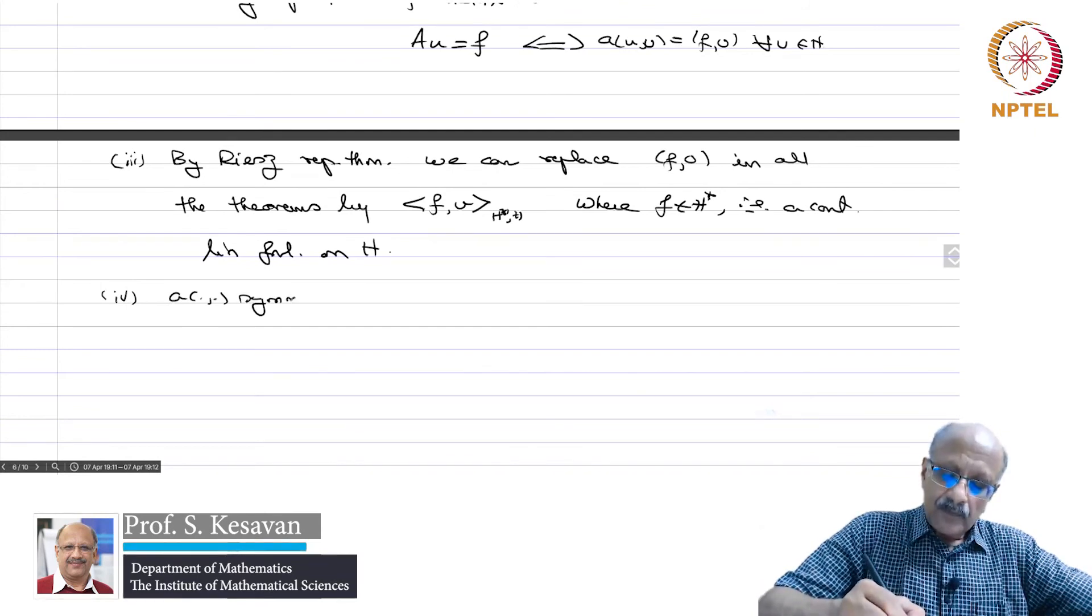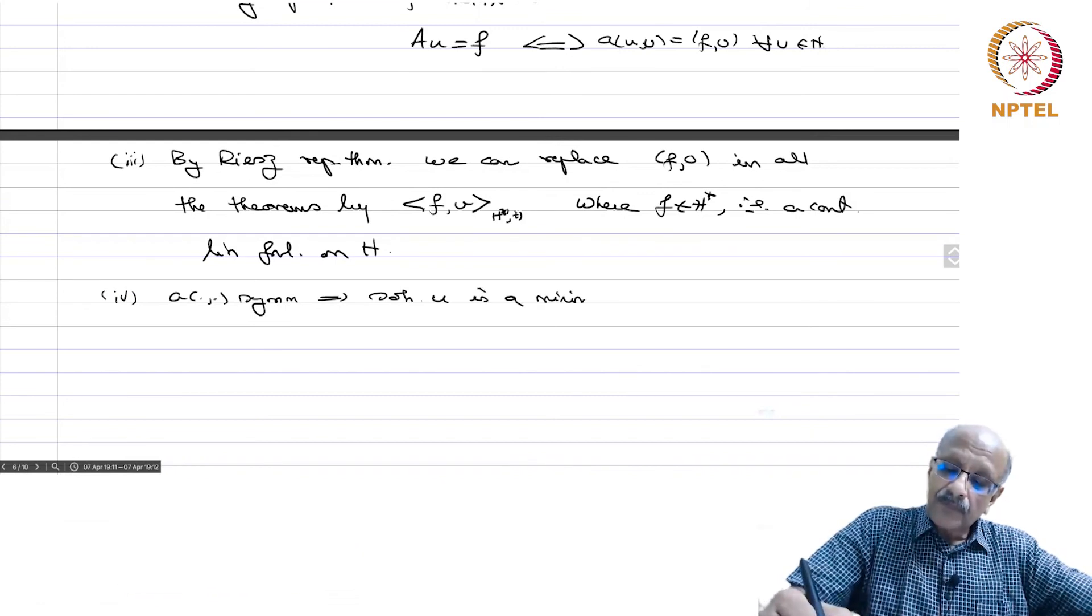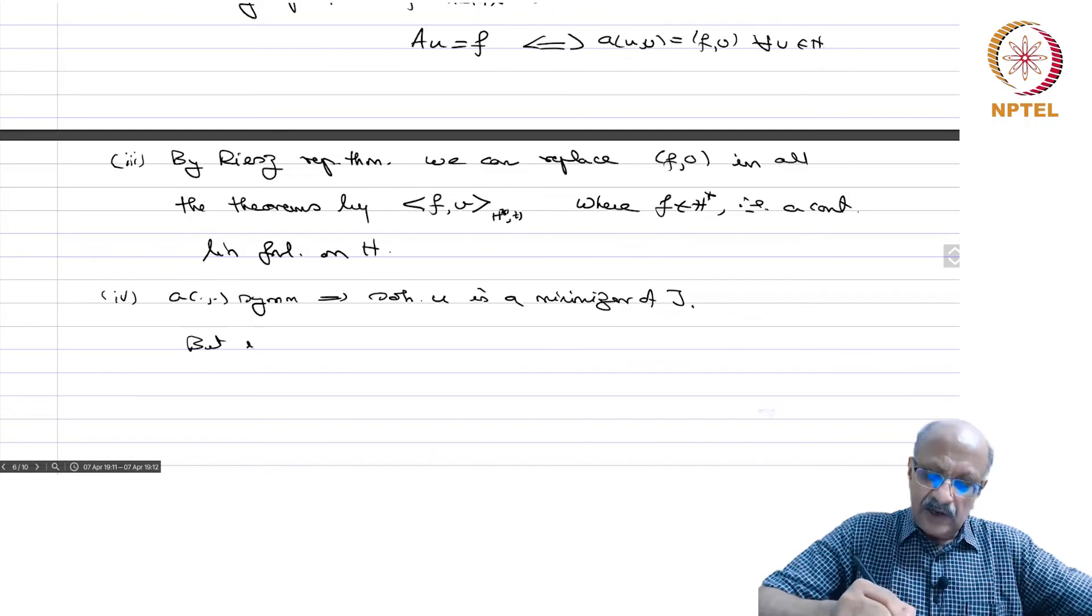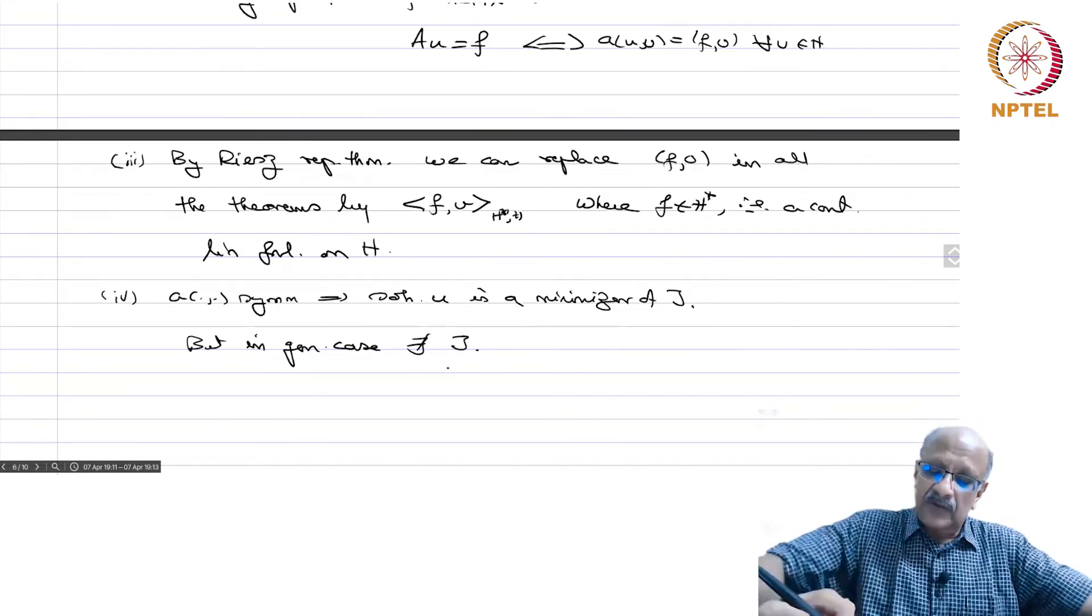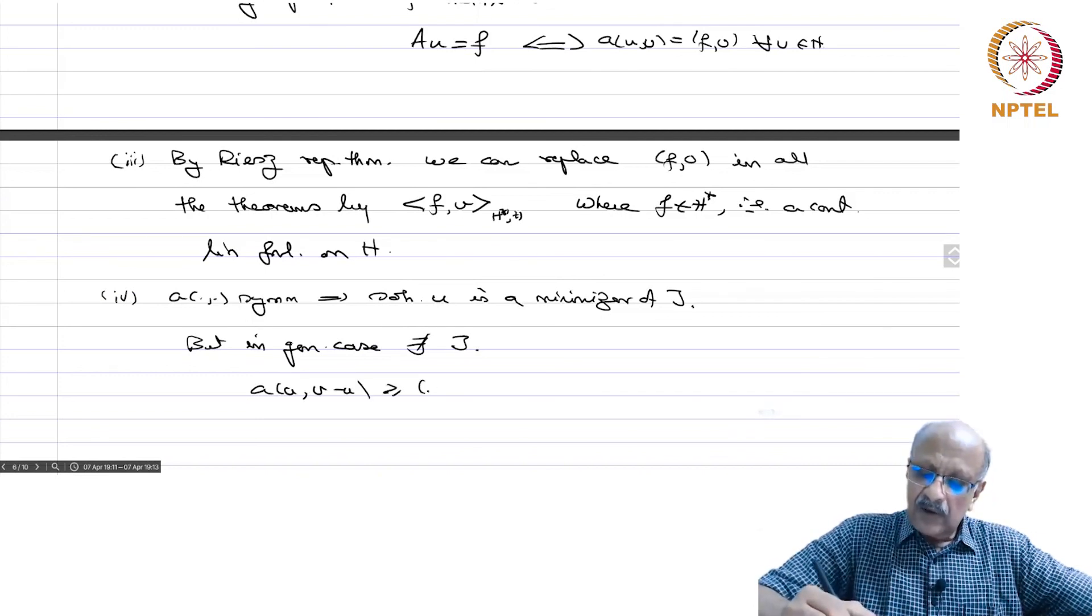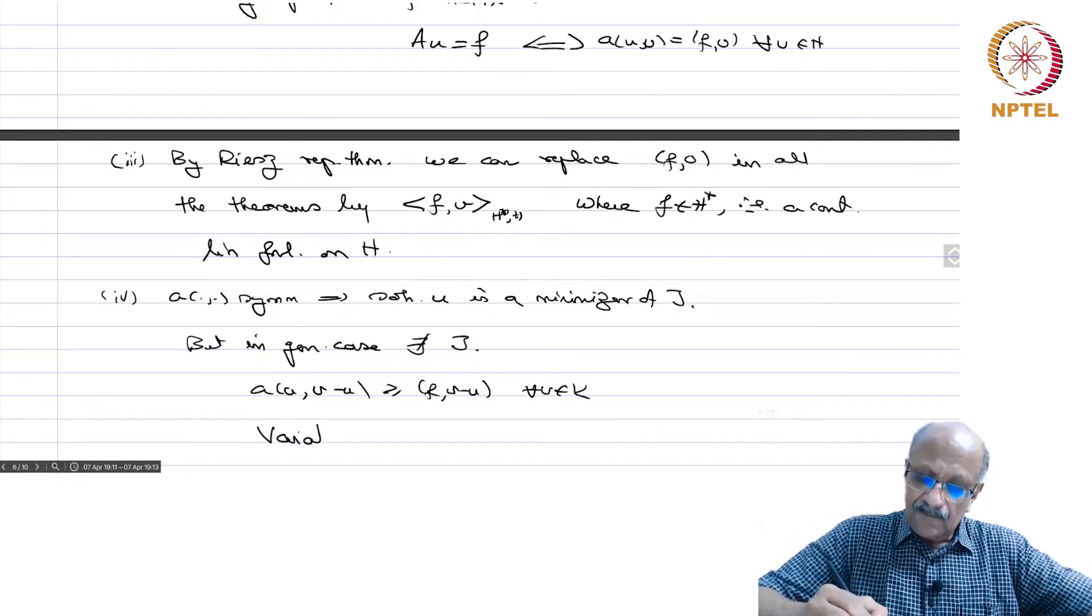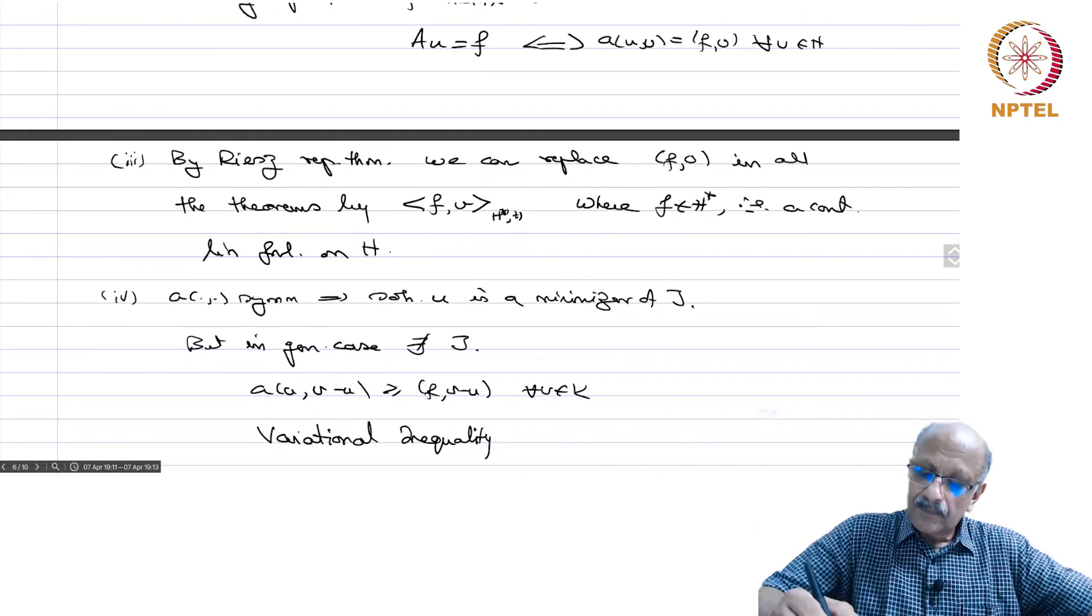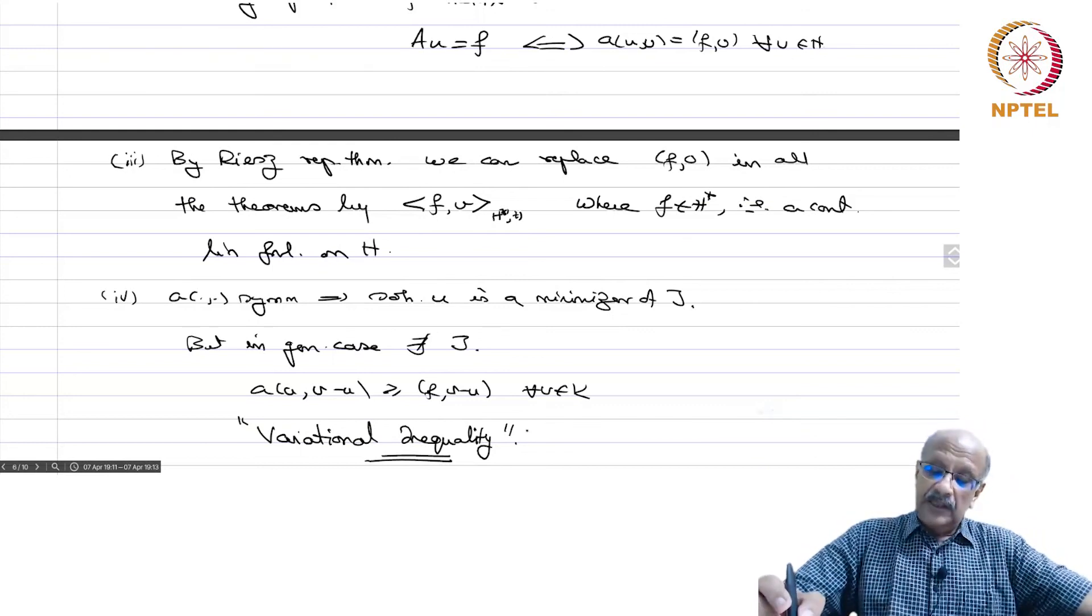Remark 4: A symmetric implies solution u is a minimizer of J, but in the general case you do not have an energy functional. There does not exist a J which is minimized, but A(u, v-u) ≥ F(v-u) for every v in K. This is called a variational inequality. Our next aim is to see several examples of this situation and then connect it with various boundary value problems.